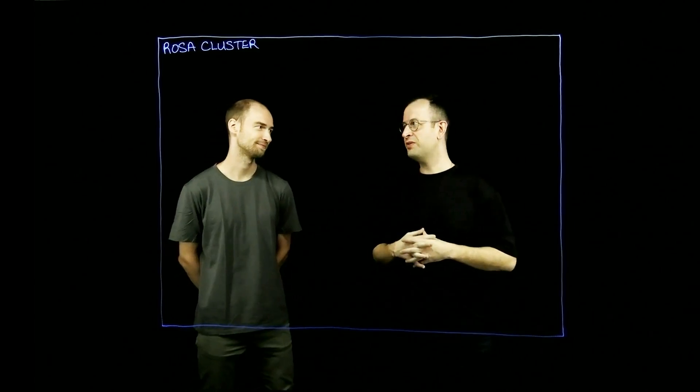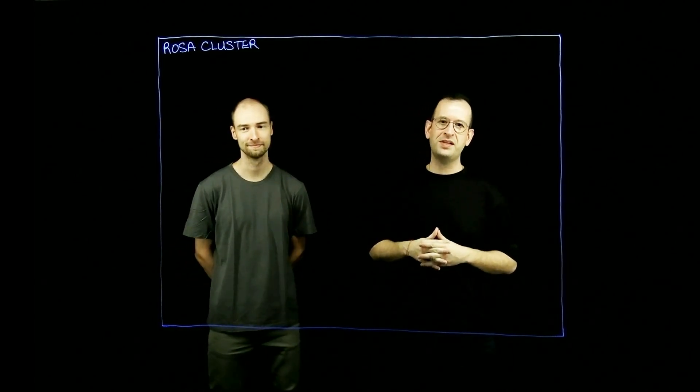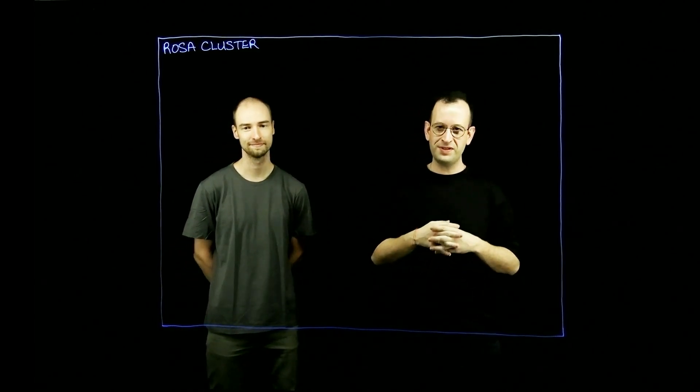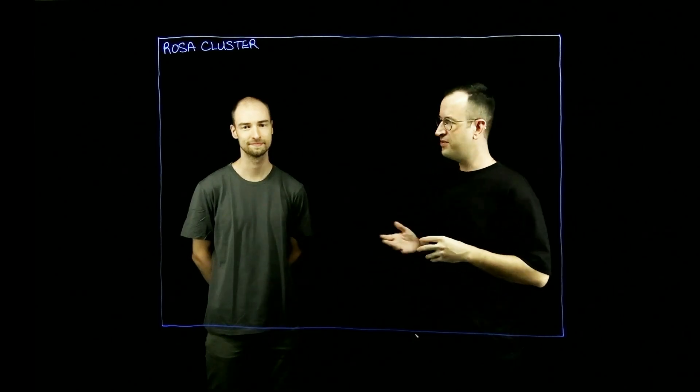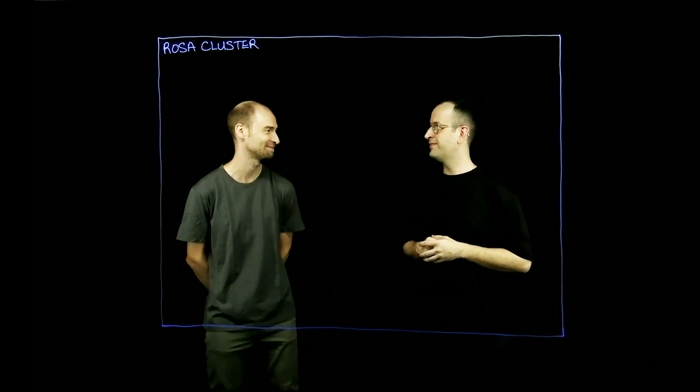Hi everyone, I'm William Garcia, Partner Solutions Architect at Amazon Web Services. Today we are back to talk about Service Mesh in Red Hat OpenShift Service on AWS, or ROSA. I'm also joined by Michael from Red Hat, a Managed OpenShift Black Belt who works on Red Hat's Managed Cloud Services team.